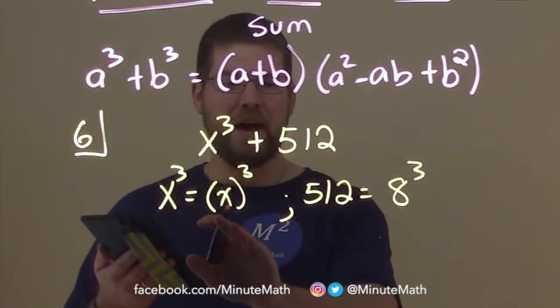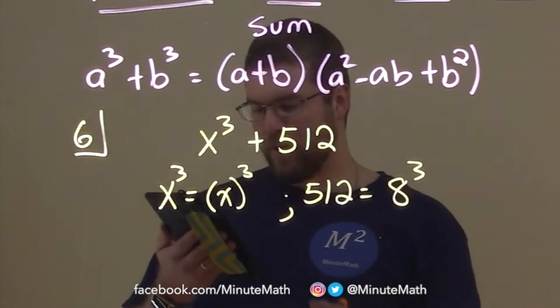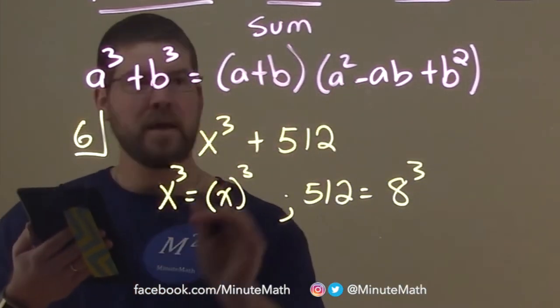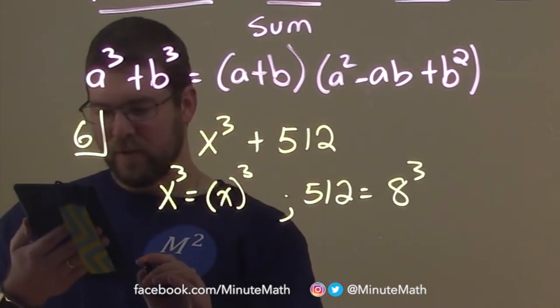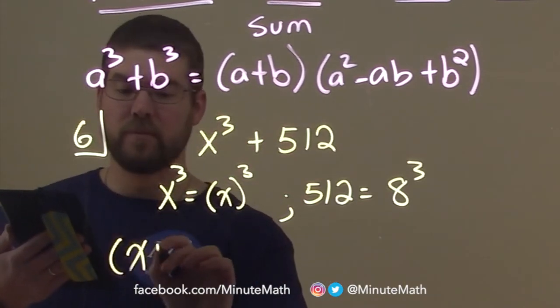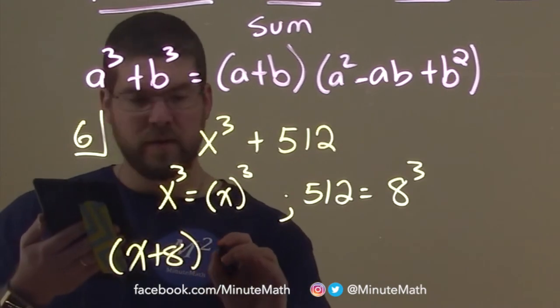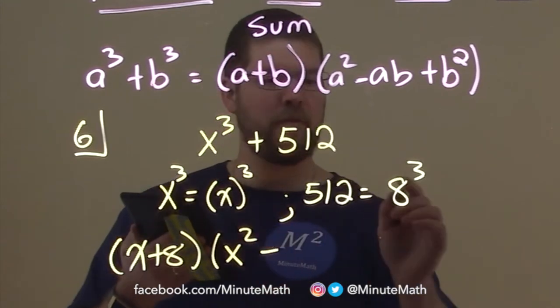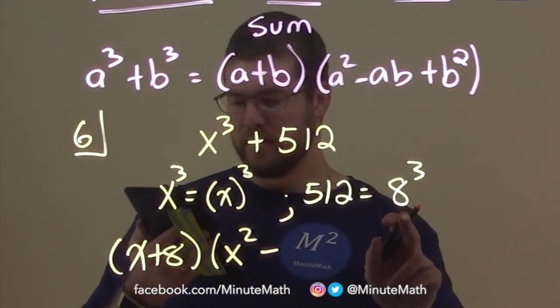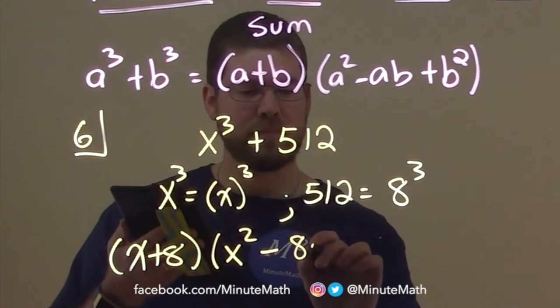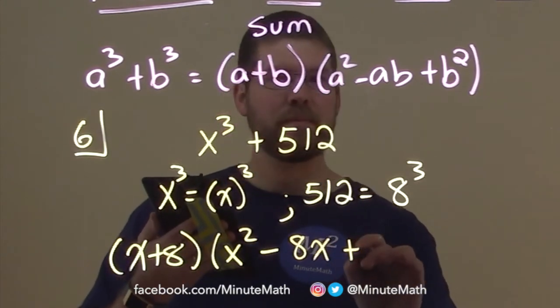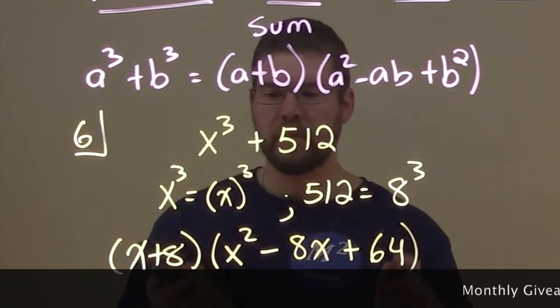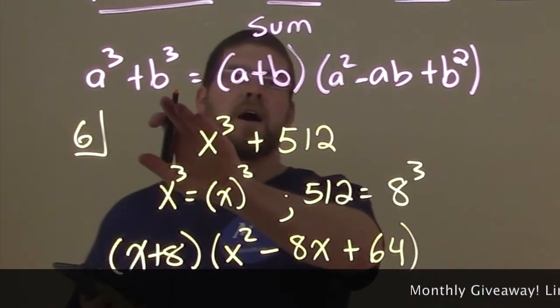So, we can rewrite this now. We have our two values, x or 1x and 8, and apply our formula. Okay. Well, a is x and b is 8. So, we have just x plus 8 times x squared minus, alright, if a is x and b is 8, then multiply them together. We have 8x plus our b value squared. 8 squared is 64. And that's it.